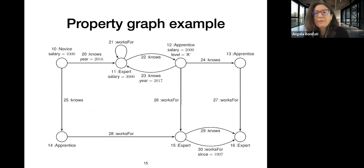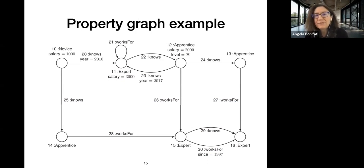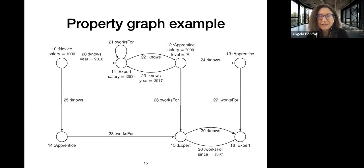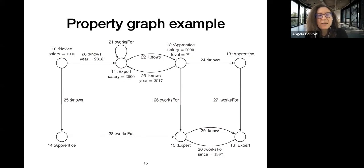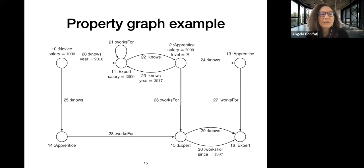Here is an example of a property graph — a professional network like LinkedIn. People are classified by expertise: novice, apprentice, or expert. They have salaries depending on their career, and they know each other or work for each other, perhaps since a given year. Each node and edge has an identifier and a label: for example, node 10 on the left is a novice with salary 1K.